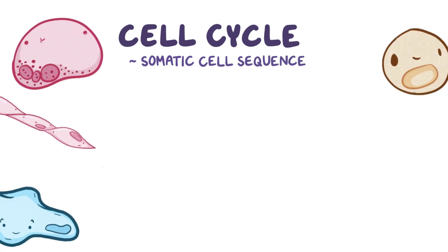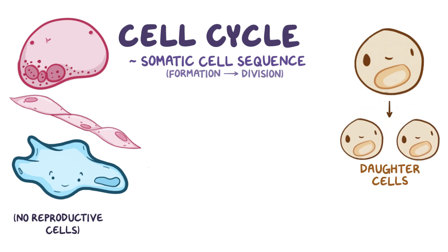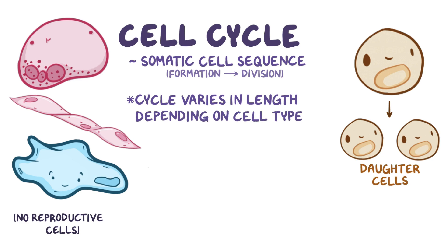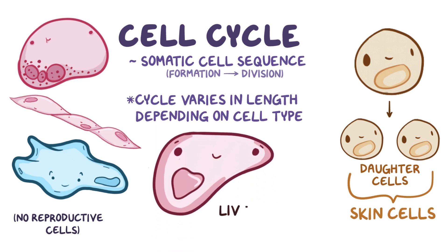The cell cycle refers to the events that somatic cells — which includes all of the cells in our bodies except the reproductive cells — go through from the moment they're formed until the moment they divide into two identical daughter cells. This cycle varies in length depending on the type of cell. For rapidly dividing cells, like skin cells, it takes less than a day, whereas for other cells, like liver cells, the cell cycle can last years.